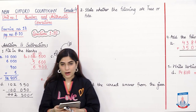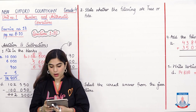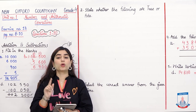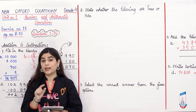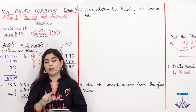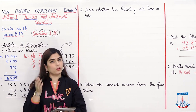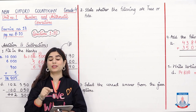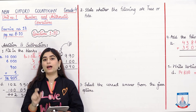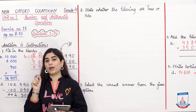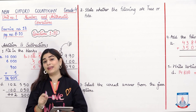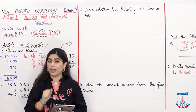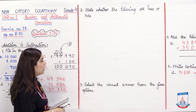Now we look at Part 2: State whether the following are true or false. We have 5 statements. We will read them, check whether each statement is correct — true or false. If true, we write true; if false, we write false. To verify, do rough working on a separate page or in the corner of your book, then staple or attach it.